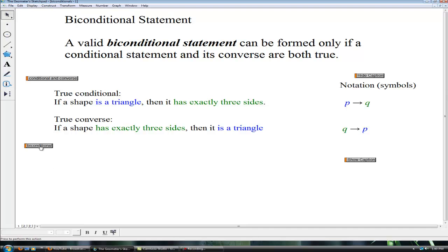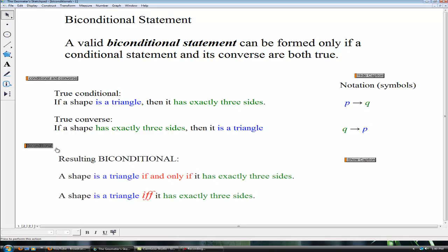Now a biconditional introduces a new format and a new phrase if and only if. So we no longer start with if the hypothesis then the conclusion. What we now do is we just state the hypothesis: a shape is a triangle if and only if it has exactly three sides.